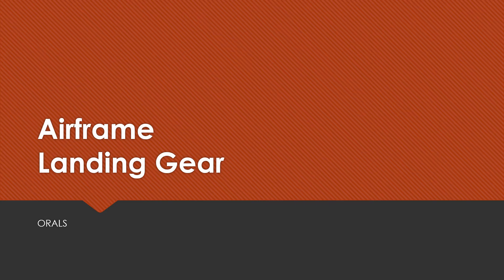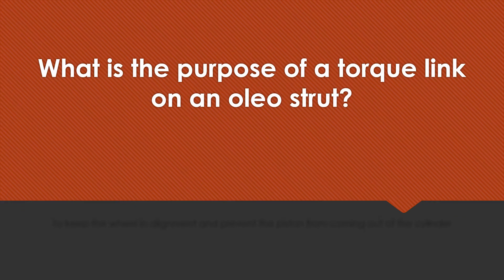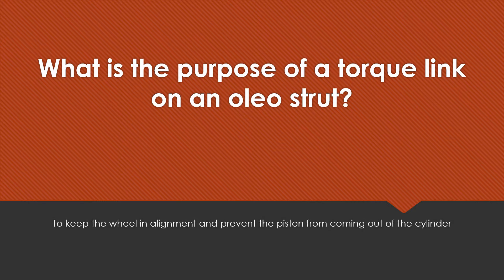Airframe Landing Gear Oral Questions. What is the purpose of a torque link on an oleo strut? To keep the wheel in alignment and to prevent the piston from coming out of the cylinder.